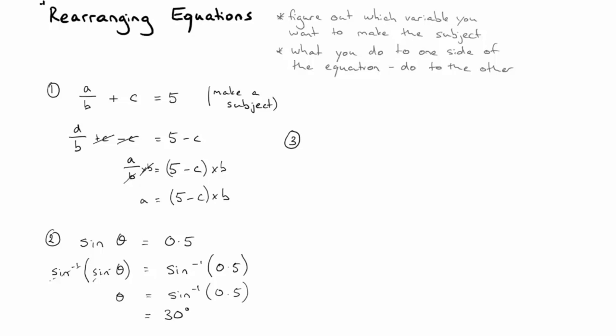The third example here is for this equation. The potential energy stored in a spring is 1 half times the spring constant times the extension of that spring to the power of 2, so extension squared. And we want to make X the subject. I like to have the thing that I want to make the subject on the left-hand side, so I'm just going to rearrange this. Half K X squared is the potential energy. I haven't done anything really to it. I've just swapped the sides over.